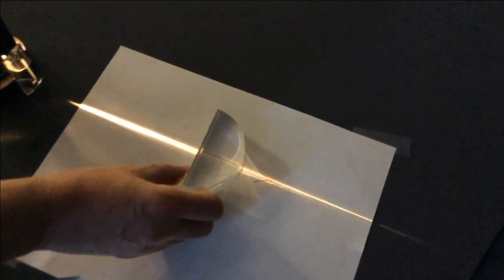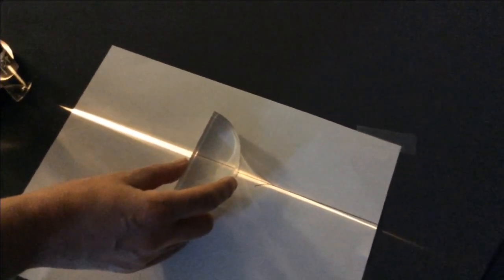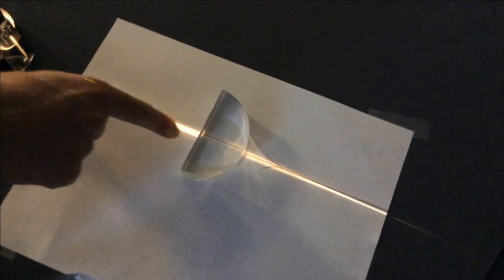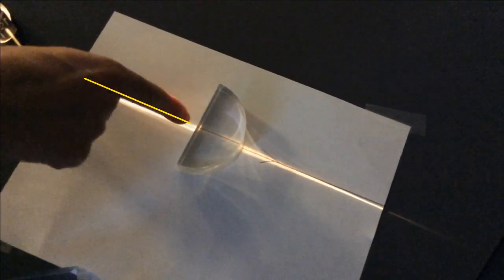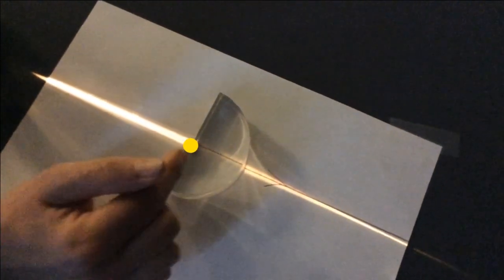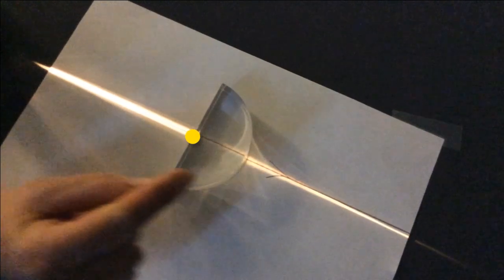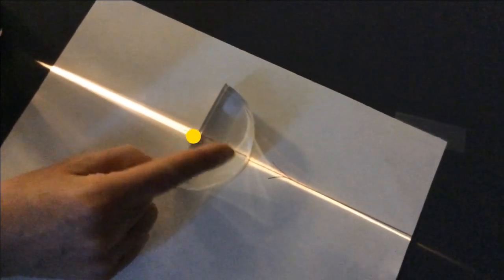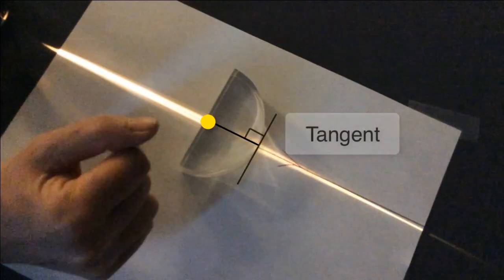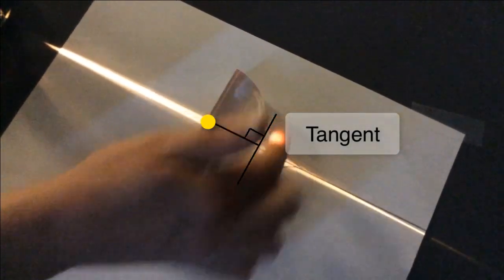To show you how it works, we can also use a half circle. Half a circle is convenient because if I make sure that the light hits exactly the center of the circle, whatever happens to it, it will always be moving along the radius of the circle. And we know that the radius is always perpendicular to the tangent.